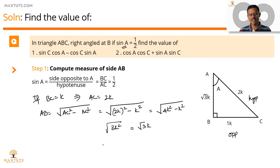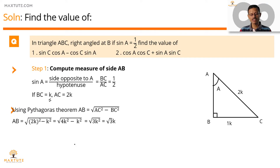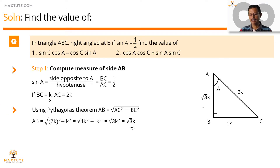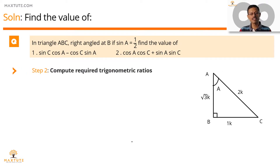Let's consolidate: BC by AC equals 1 by 2, so BC equals K and AC equals 2K. Using Pythagoras theorem, AB equals root 3K. Step 2 — we have the value of sine A. We now need the values for sin C, cos A, and cos C, and we will compute all three of them.